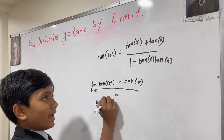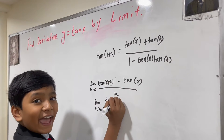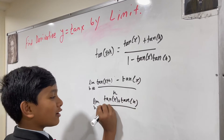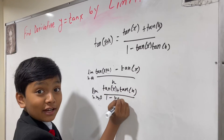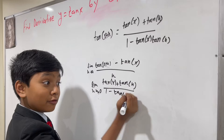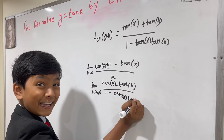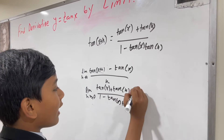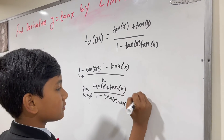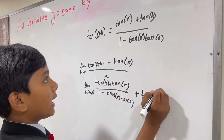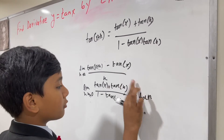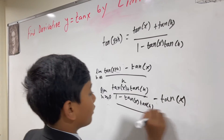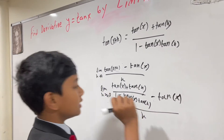You have tan of x plus tan of h — that's the cookie-cutting stuff. But the stuff we're about to jump into is not cookie-cutting. So you have that, plus tan, or rather minus tan of x, over h.